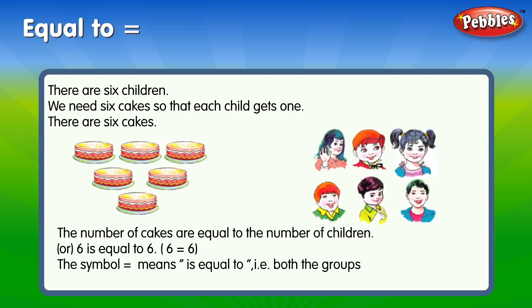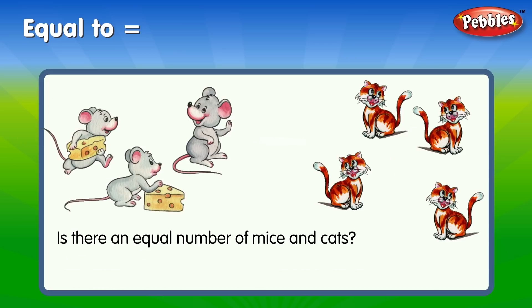That is, both the groups have got the same number of objects. Is there an equal number of mice and cats?